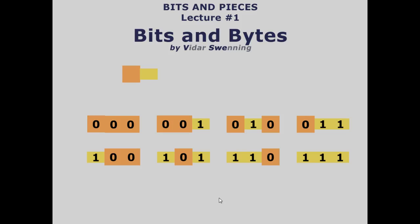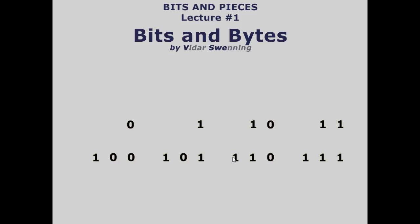When it comes to computers, each single binary digit is what's called a bit — more on that later. If we remove the leading zeros, what we get is how we count in binary: 0, 1, 10, 11, 100, 101, 110, and 111. We've now seen base 8 and base 2.